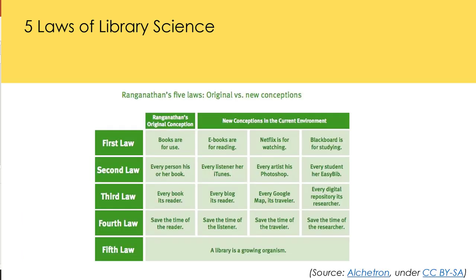Another way to see the laws is by understanding them in the light of new conceptions. So 'books are for use' might be translated as 'e-books are for reading,' 'Netflix is for watching,' 'Blackboard is for studying.' 'Every person his or her book' might become 'every listener her iTunes,' 'every artist his or her Photoshop,' 'every student his or her EasyBib.' 'Every book its reader' becomes 'every blog its reader,' 'every Google map its traveller,' 'every digital repository its researcher.'